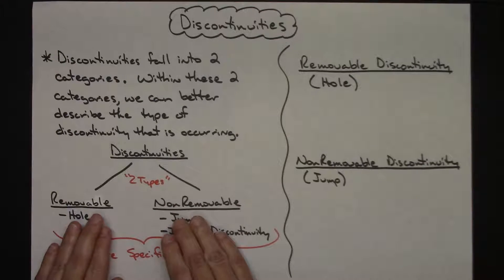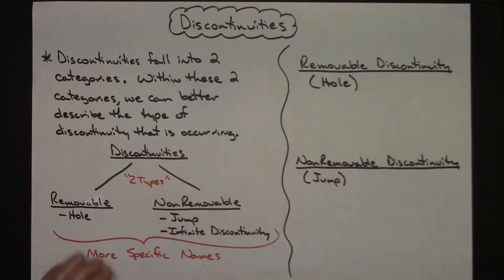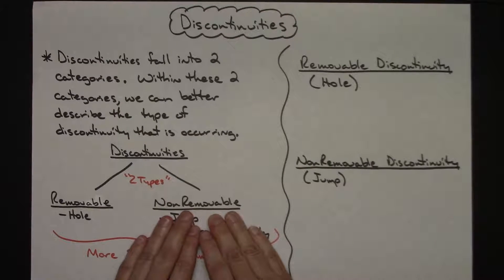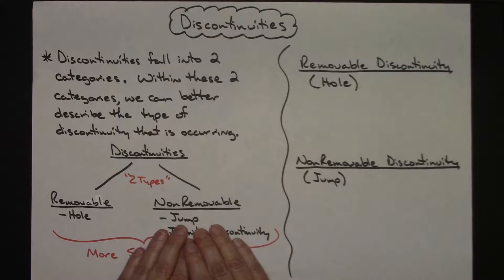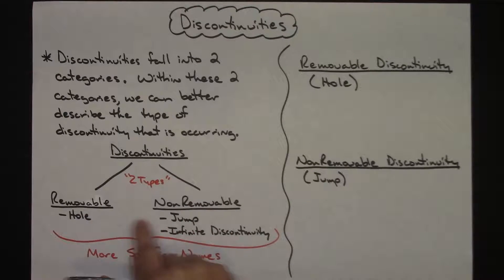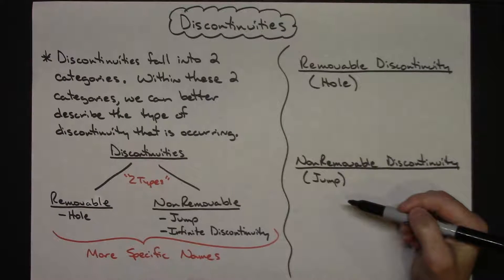Discontinuities fall into two main categories: removable and non-removable. If you have a removable discontinuity, there's going to be a hole in the graph — that's pretty straightforward. If you have a non-removable discontinuity, you could have a jump or an infinite discontinuity. The hole, the jump, and the infinite discontinuity are more specific names that describe the discontinuity further than just saying removable or non-removable.